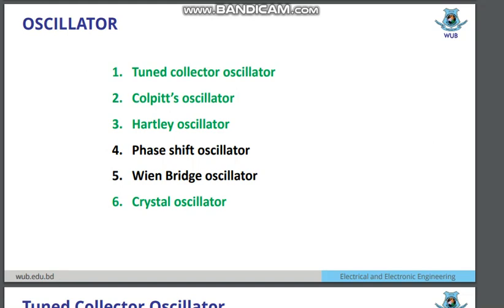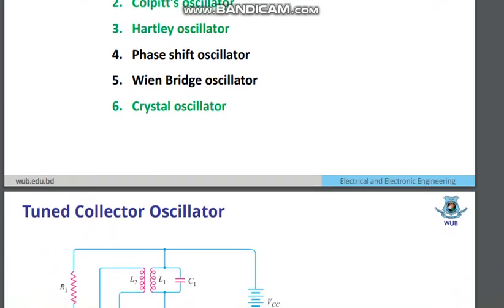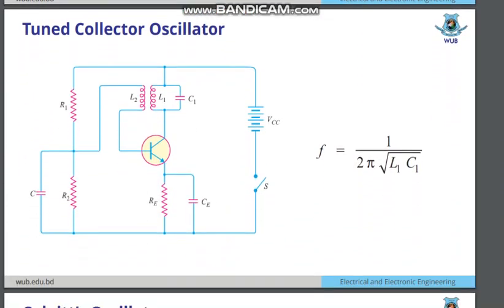My dear students, these types of oscillators that we can see here — this is the circuit diagram of the tuned collector oscillator. Here you can see there is a tank circuit; that is the part of the tank circuit, that is the tuned oscillator, and that is the part where you can tune.